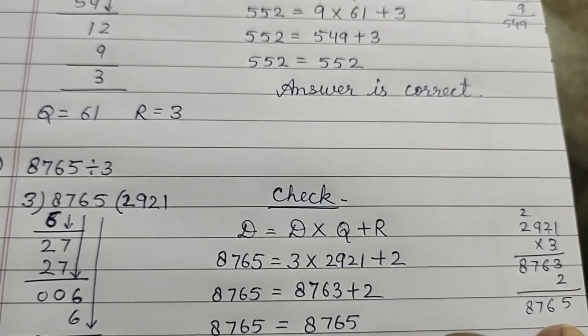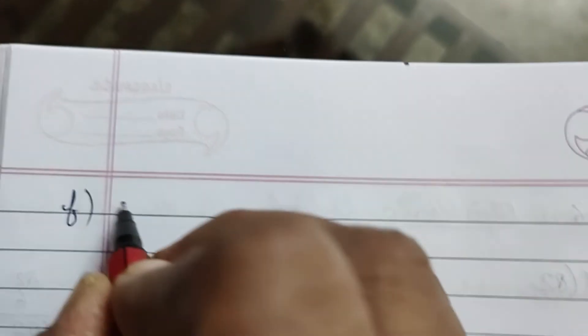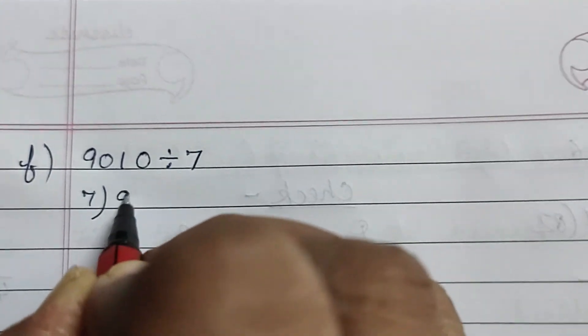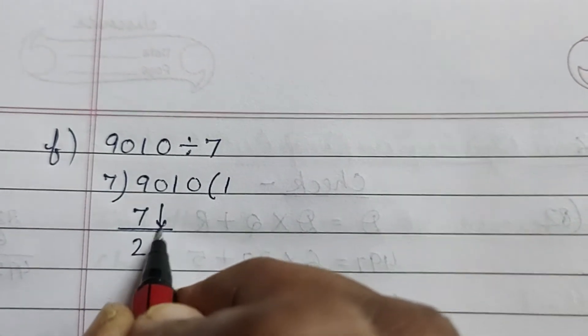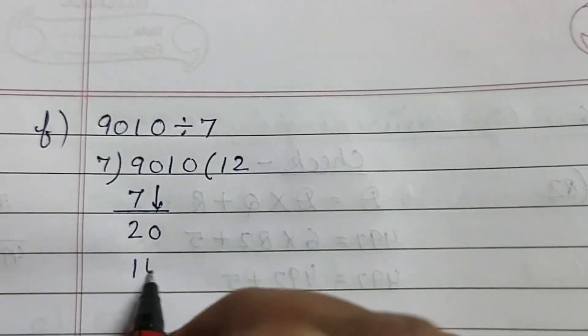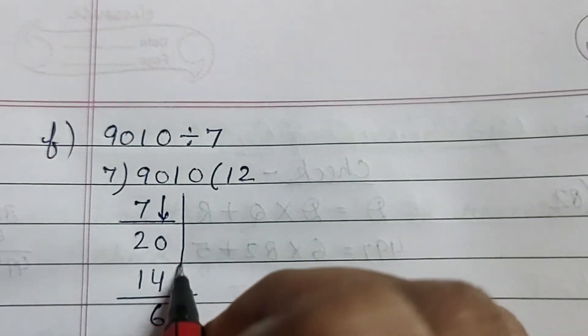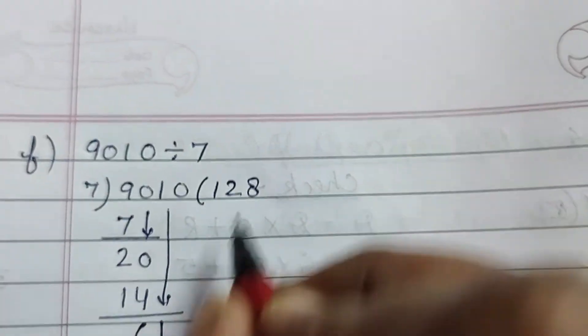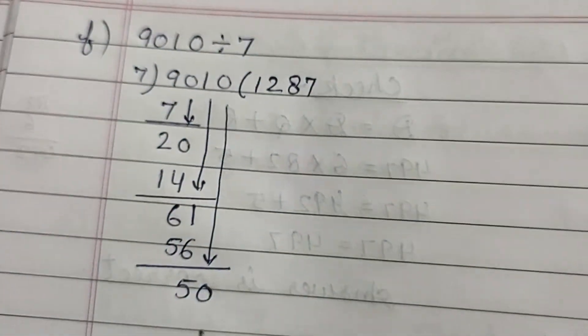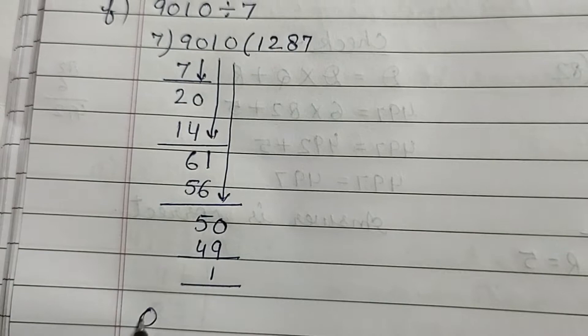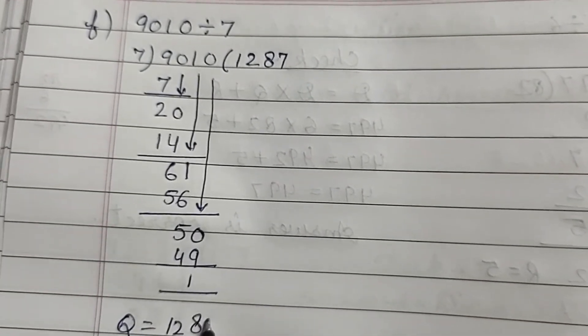Okay, now next part: 9010 divided by 7. 7 into 9 gives 1, remainder 2. Bring down 0: 7 into 20 gives 2, remainder 6. Bring down 1: 7 into 61 gives 8, remainder 5. Bring down 0: 7 into 50 gives 7, remainder 1. Quotient is 1287 and remainder is 1.